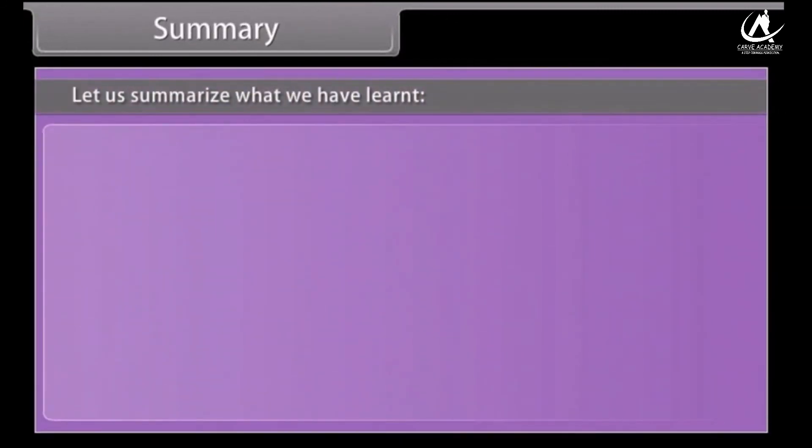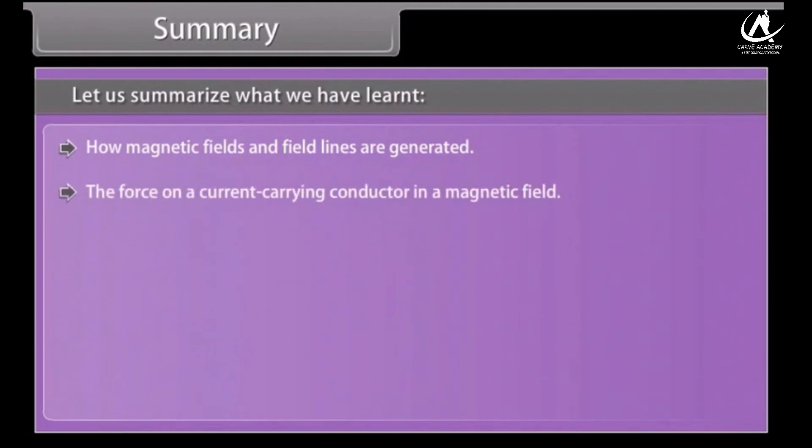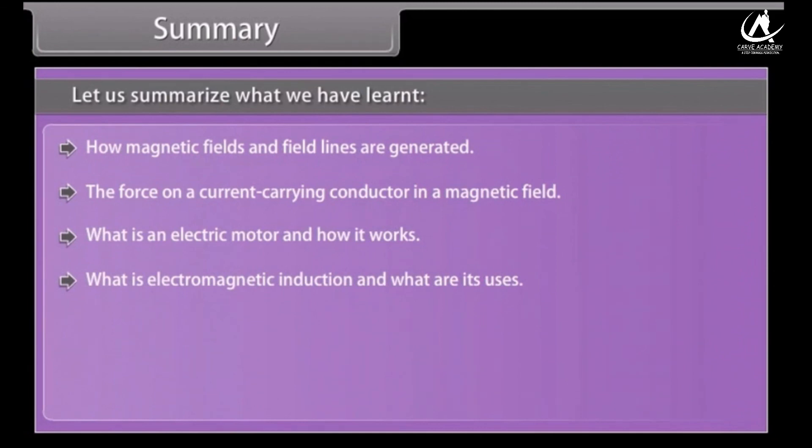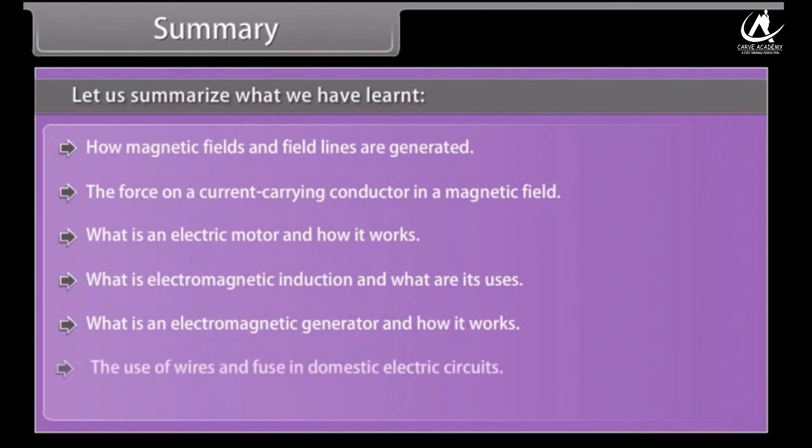Summary. Let us summarize what we have learned. How magnetic field and field lines are generated, the force on a current carrying conductor in a magnetic field, what is an electric motor and how it works, what is electromagnetic induction and what are its uses, what is an electromagnetic generator and how it works, and the use of wires and fuse in domestic electric circuits.